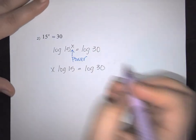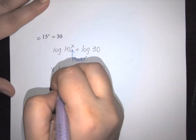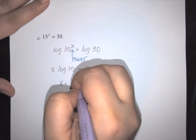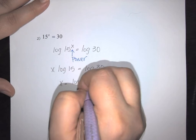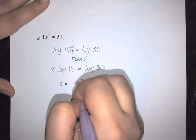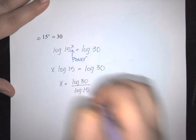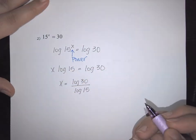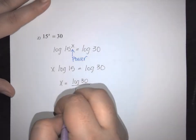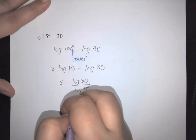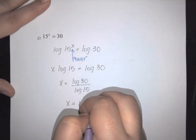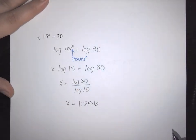I need to get x by itself, so x equals log of 30 divided by log of 15. Using your calculator, you get x approximately equal to 1.256.